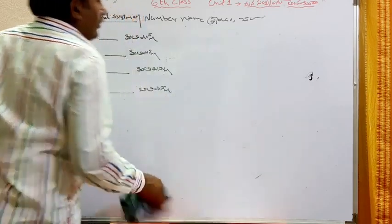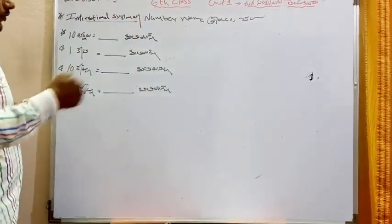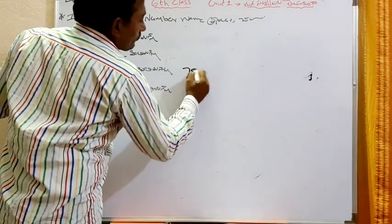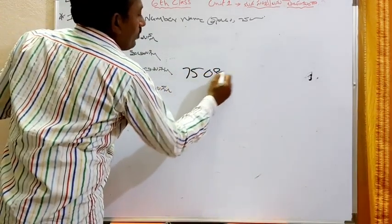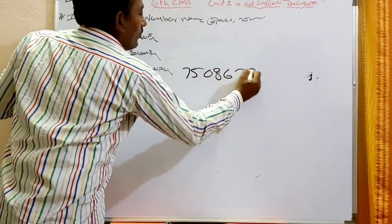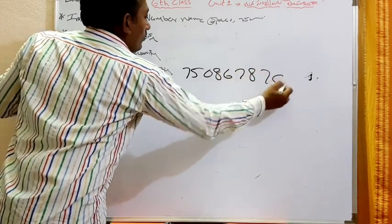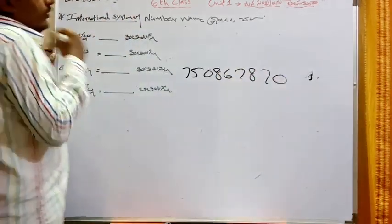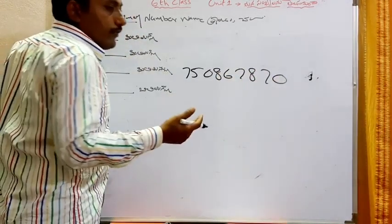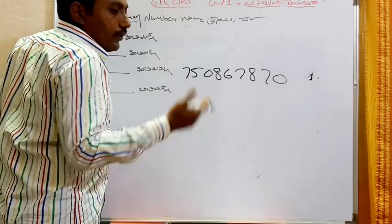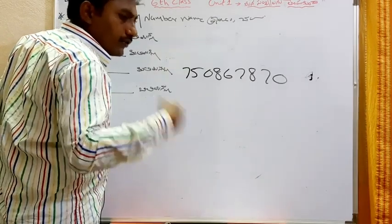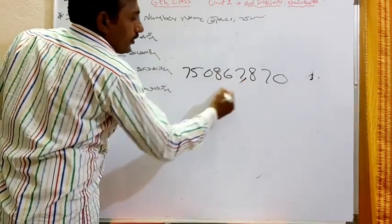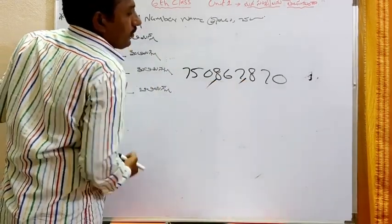Now, in the international system, relationships are available. Good. After three digits, after three, after three. Simple. After three, after three.